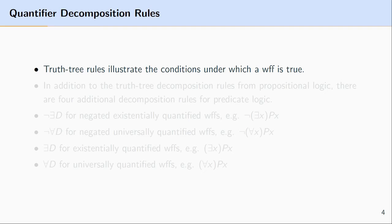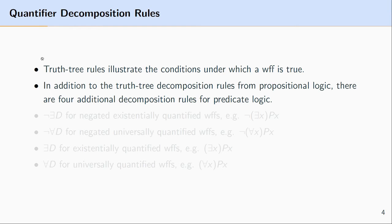In order to make use of the truth tree method for predicate logic, you'll need to know how to use the decomposition rules from propositional logic. In other words, to use the truth tree method for predicate logic — which we'll abbreviate as PL — you'll already need to know how to use the truth tree method for propositional logic. I'll put a couple of links in the description in case you want to refresh yourself. One key thing you'll need from propositional logic is the various truth tree decomposition rules, and we'll import all of those into predicate logic.